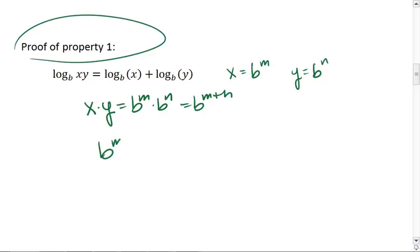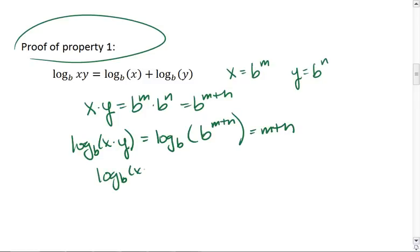So we'll write this as b to the m times b to the n equals b to the m plus n. What's important to see though is that if we take the log of x times y, log base b of x times y, that's equal to log base b of b to the m plus n, which equals m plus n. So log base b of x times y equals m plus n.